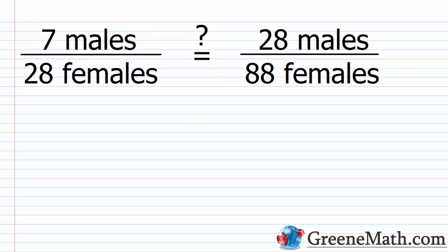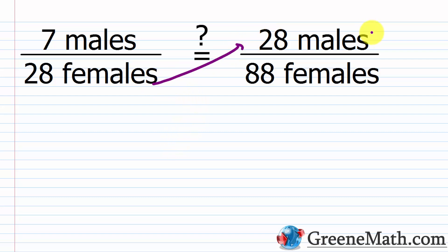Here's a typical ratio and proportion problem: seven males to 28 females — is this equal to 28 males to 88 females? Make sure units match: males in numerator, females in denominator on both sides. Cross multiply: 28 times 28 is 784, and 88 times 7 is 616. The cross products are not equal, so no, this is not a proportion — these two ratios are not equal.